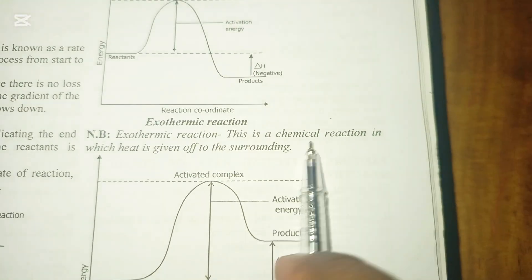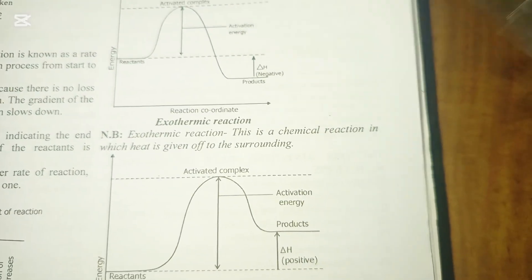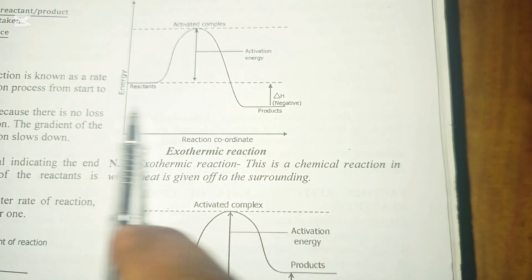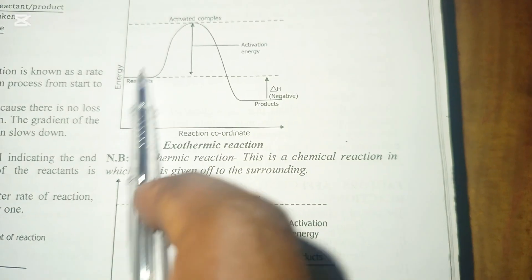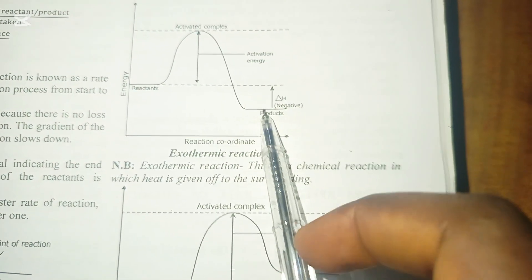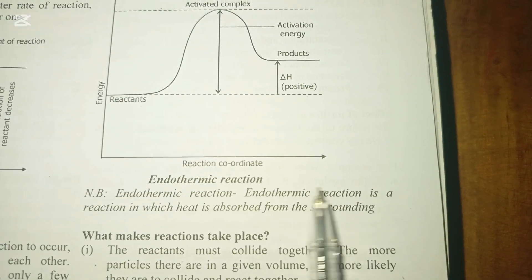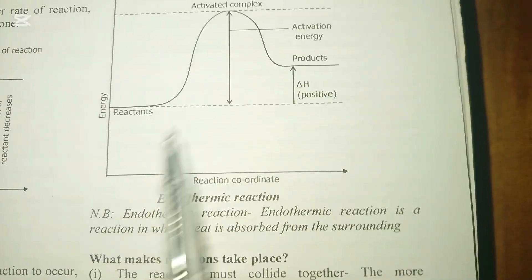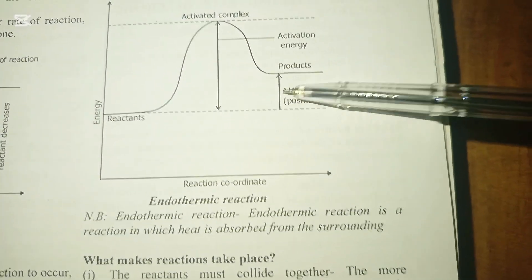Now we have exothermic and endothermic reactions. An exothermic reaction is a chemical reaction in which heat is given off to the surroundings — there is a loss of heat. The heat of the product is smaller than the heat of the reactant. An endothermic reaction is one in which heat is absorbed from the surroundings, so the heat of the product is bigger than that of the reactant. The difference between them is called the enthalpy change, ΔH.